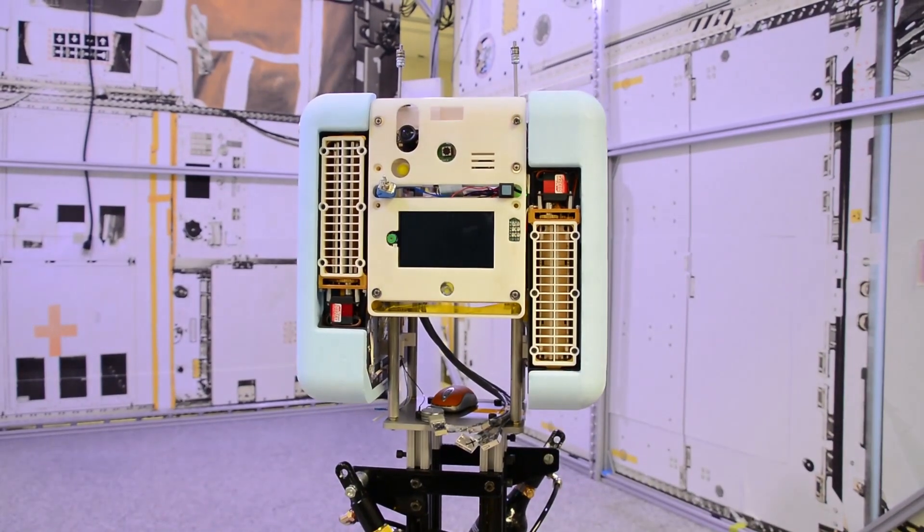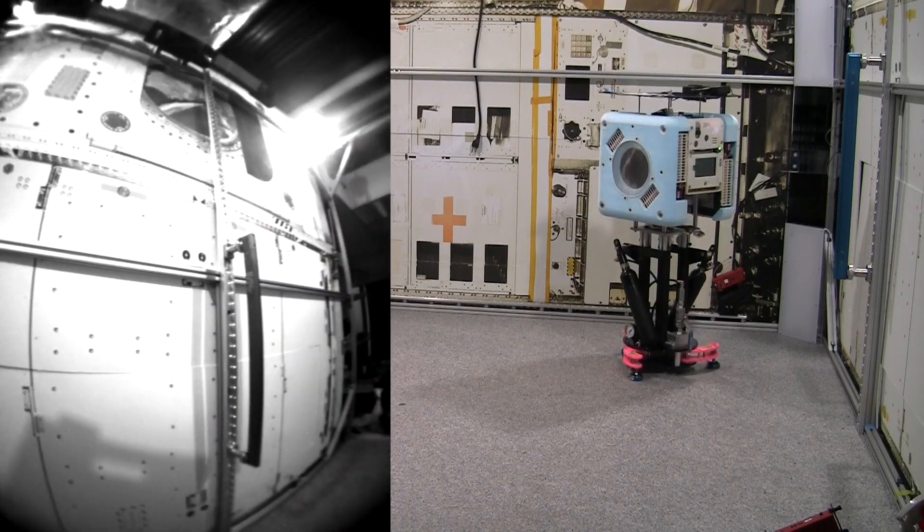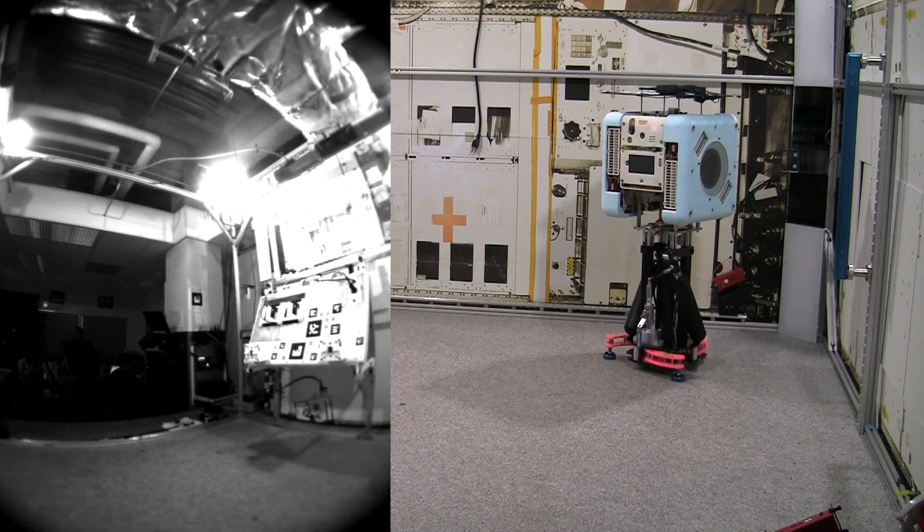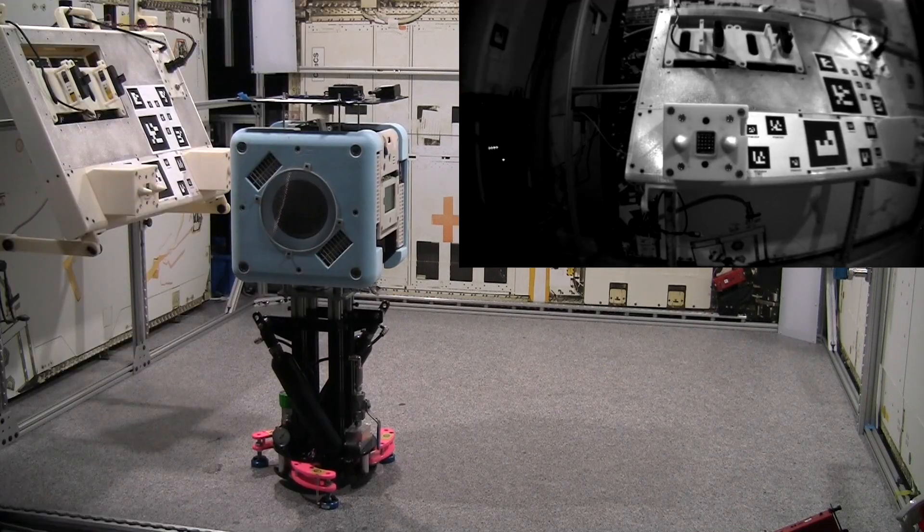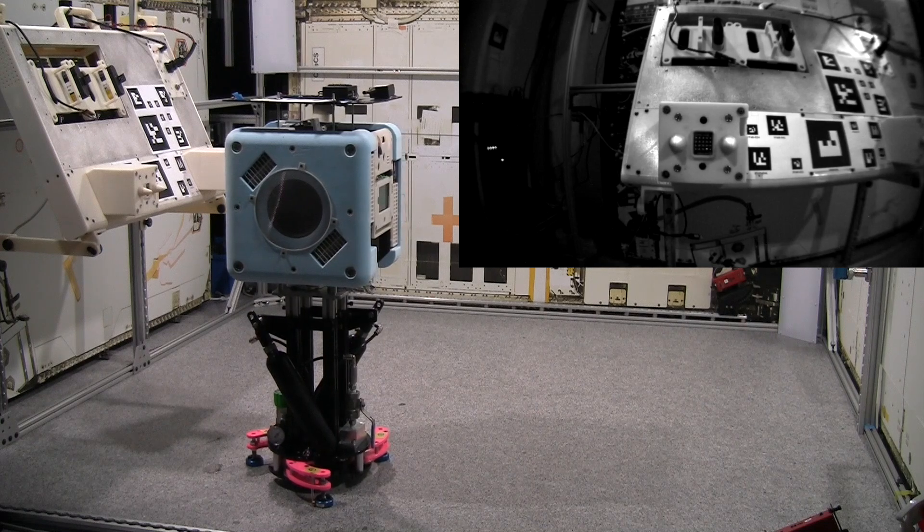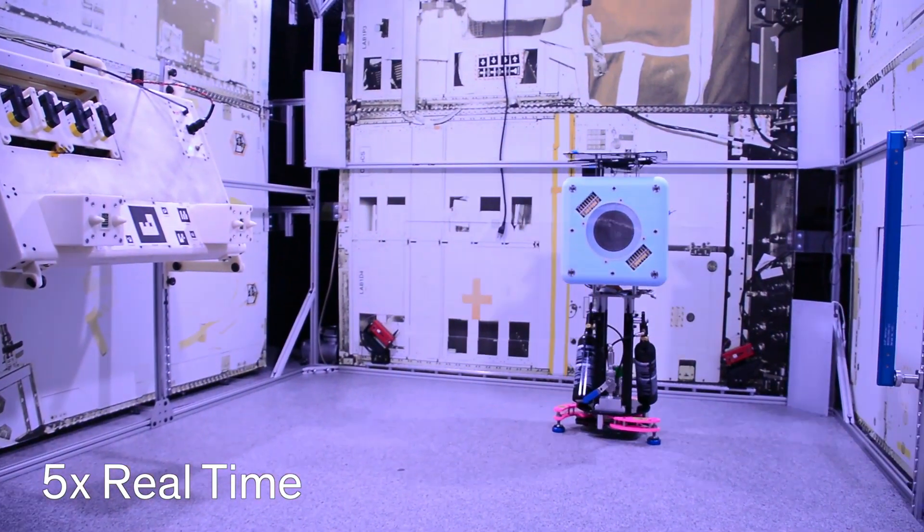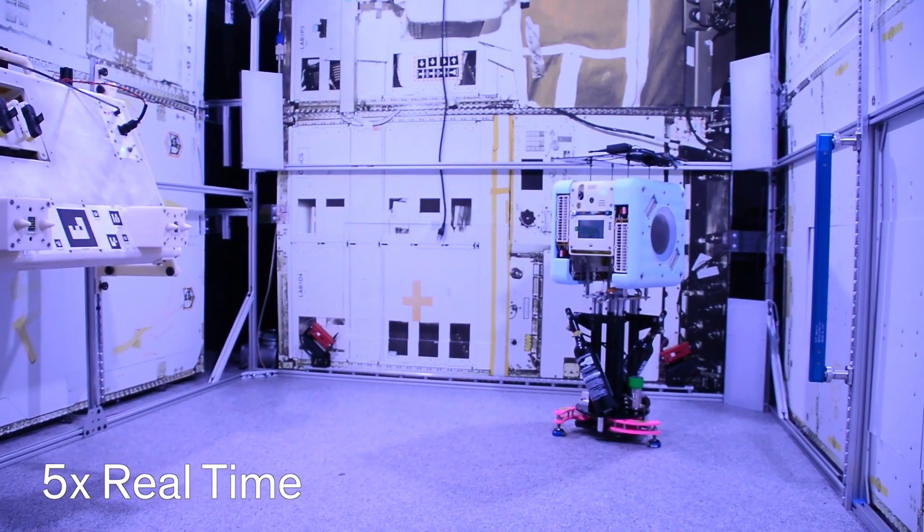This is the nav cam. We use this for general purpose navigation. So the robot will recognize the pre-existing features, landmarks on the inside of the ISS. You can see in our lab environment here we actually have posters that are basically blown up photographs of the ISS walls to give us some realistic visual texture to work with.